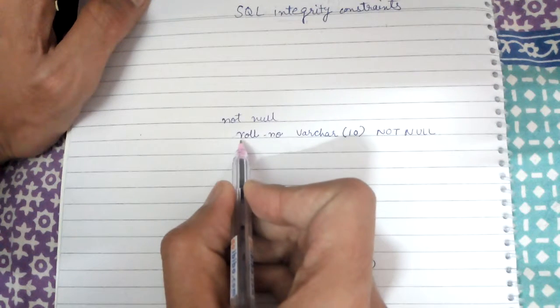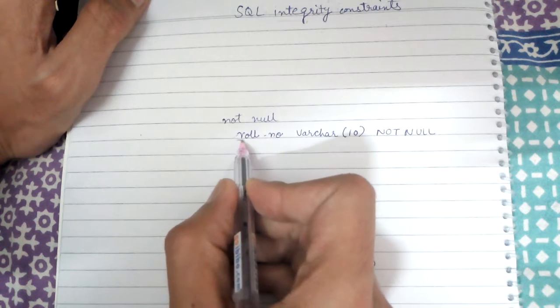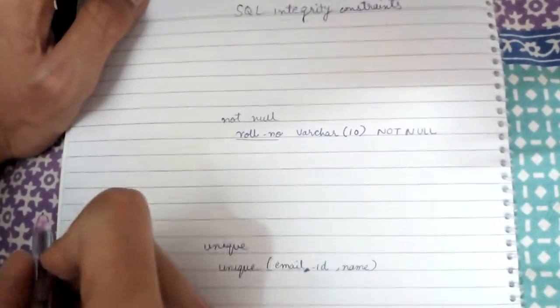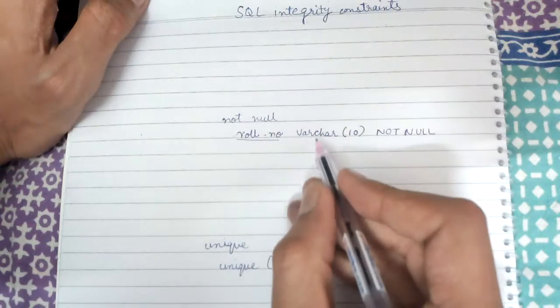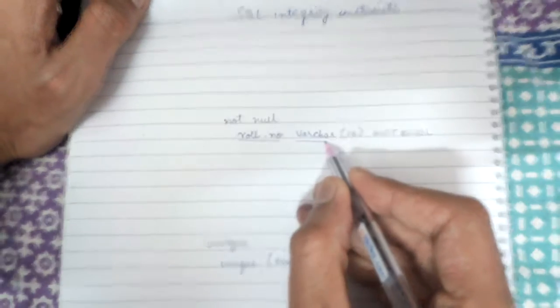I am defining one variable called roll number. In our students table, I have this roll number variable. It's a varchar data type.